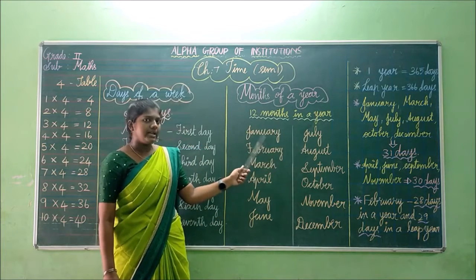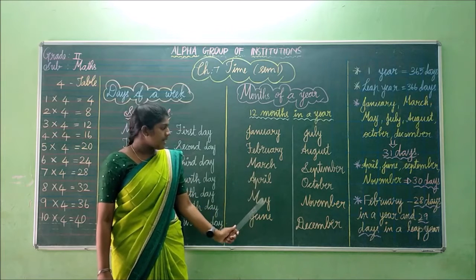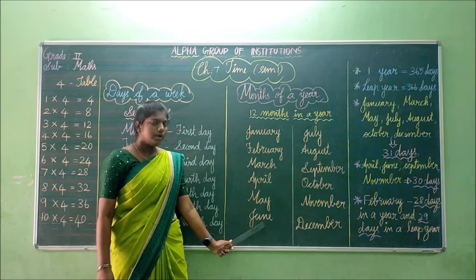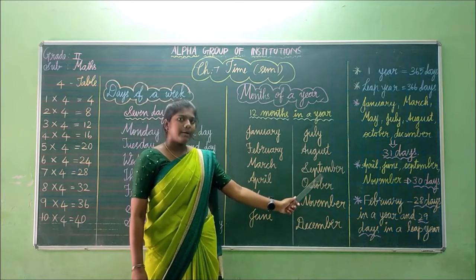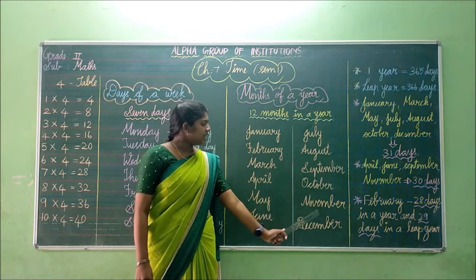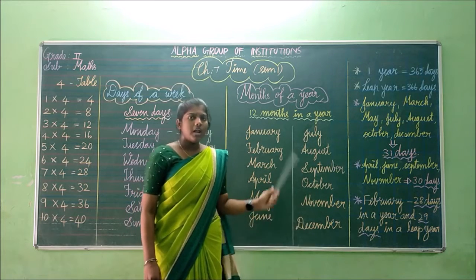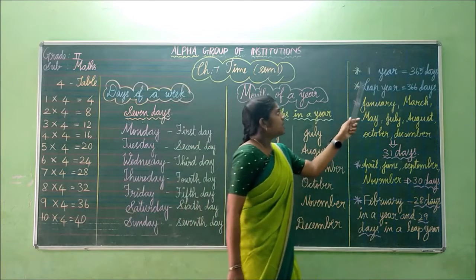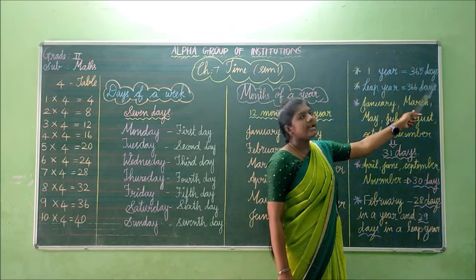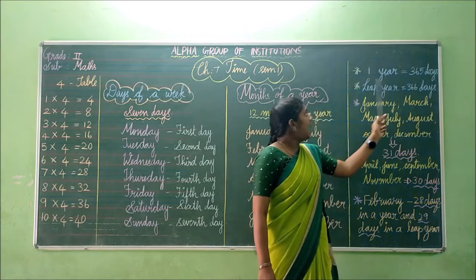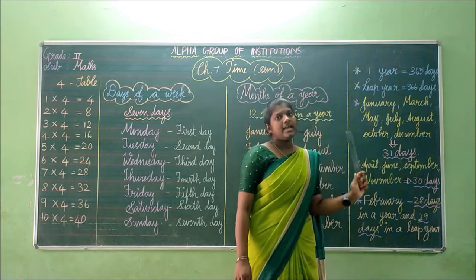Next, months of a year. There are 12 months in a year, and they are January, February, March, April, May, June, July, August, September, October, November and December. How many days are there in a year? 1 year is equal to 365 days. And in a leap year we will have 366 days.